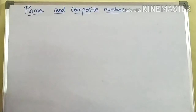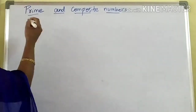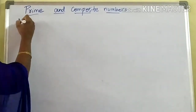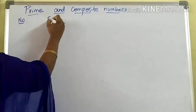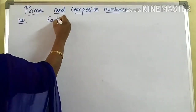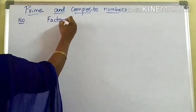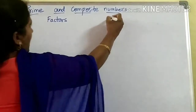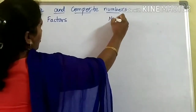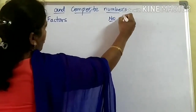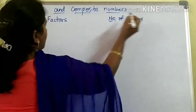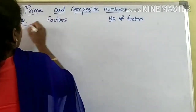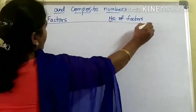Now let us observe some numbers. I am going to take a few numbers here. I will find the factors of each number and write how many number of factors that particular number has.